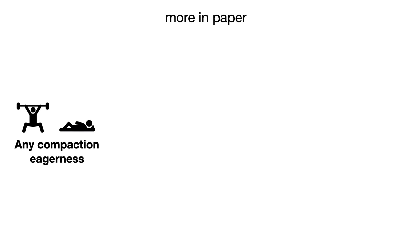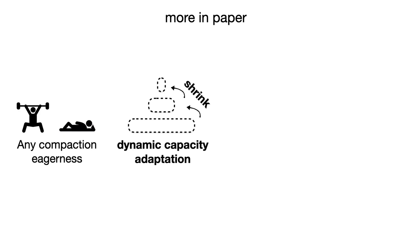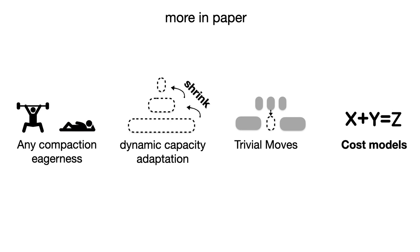Now in the paper, there are various other design aspects we explore. We show how to generalize Spooky across any compaction policy from very eager ones to very lazy ones. We integrate Spooky with a technique known as dynamic opacity adaptation to also restrict space amplification resulting from the existence of obsolete entries in the tree. We show how to perform trivial moves by simply moving rather than merging non-overlapping files across levels. And we provide cost models to allow reasoning about the different designs analytically.